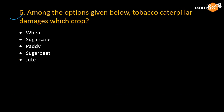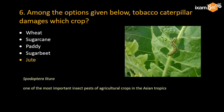Question number 6: among the options given, which crop does the tobacco caterpillar damage? The tobacco caterpillar damages many crops, and the answer is jute. The scientific name of the tobacco caterpillar is Spodoptera litura. Spodoptera litura affects many crops and is one of the most important agricultural insect pests in Asian tropics. This type of technical agriculture question also comes in the NABARD exam.